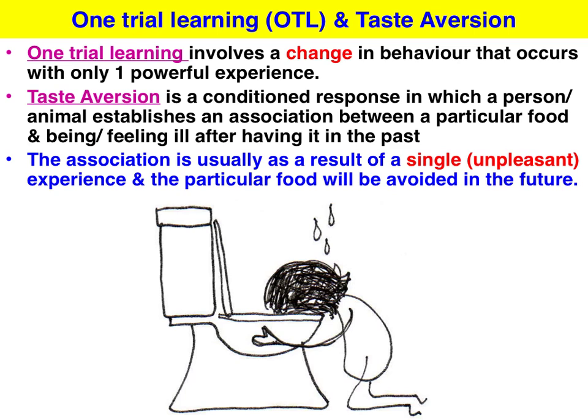In area study number one, learning, we're focusing on taste aversions that occur as a result of One Trial Learning. Taste aversion is a conditioned response in which a person or animal establishes an association between a particular food and feeling ill after having it in the past. The key point is the association is usually a result of one single unpleasant experience, i.e. food poisoning or gastro-type symptoms.